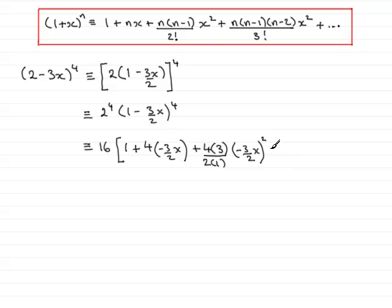Then we have the next term, which will be n, which is 4, times (n - 1), so that's 3, times (n - 2), that's 2, all over 3 factorial, or simply 3 times 2 times 1. And then it's the x term, which is -3x/2, all cubed.